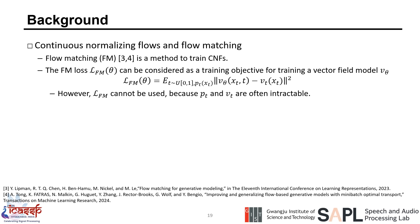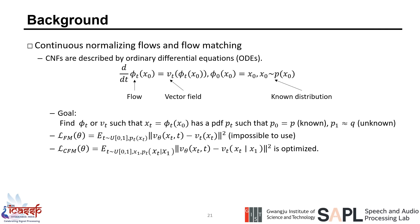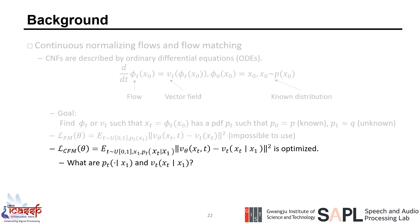Flow matching is a method to train continuous normalized flows. The FM loss L_FM can be considered as a training objective, but it cannot be used because PT and VT are often intractable. Conditional flow matching (CFM) loss is utilized instead. Since the gradients of the CFM loss and FM loss are the same under mild assumptions, it is reasonable to use the CFM loss. We can optimize the CFM loss for the neural network V_theta. In the CFM loss, PT given X1 and VT given X1 appear.